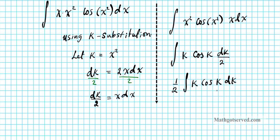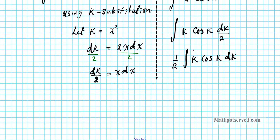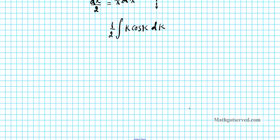To evaluate one-half times the integral of k cosine(k) dk, we use integration by parts. Using the LIPET rule, the trig function is the last to select as u, so the power function k gets chosen. Therefore u equals k, and dv equals cosine(k) dk.